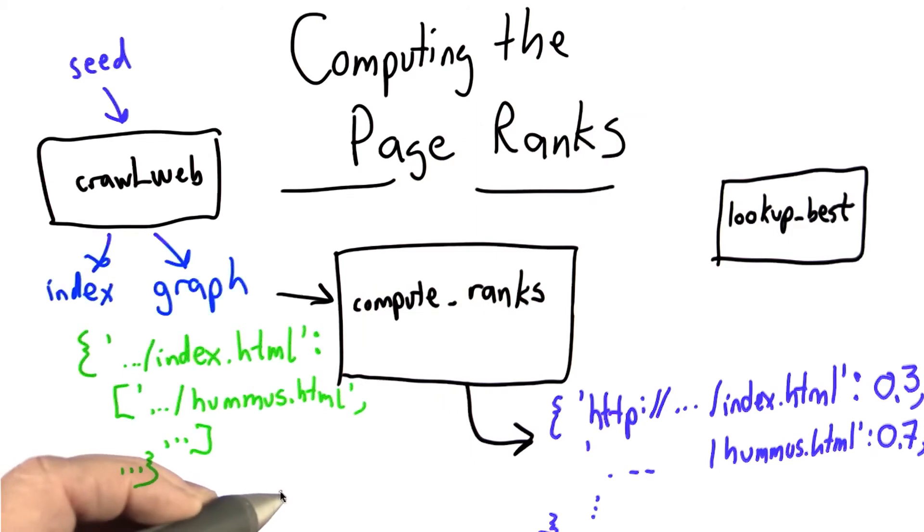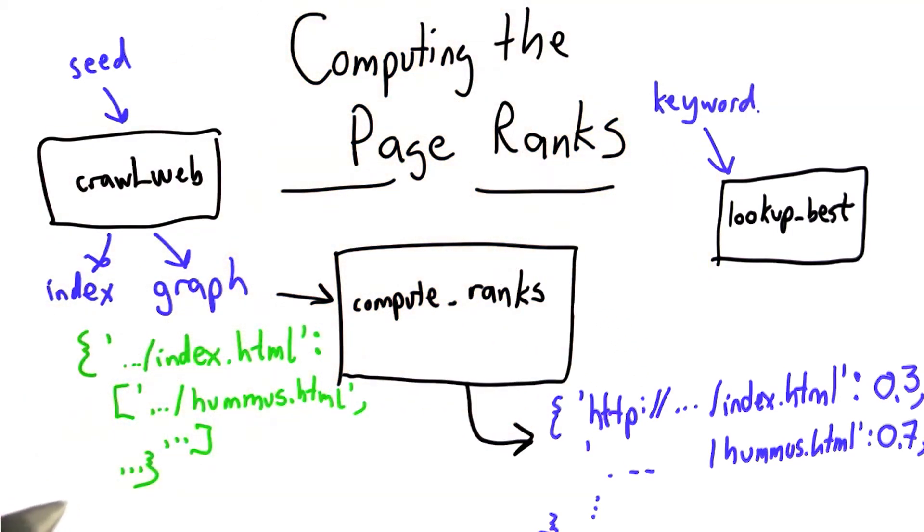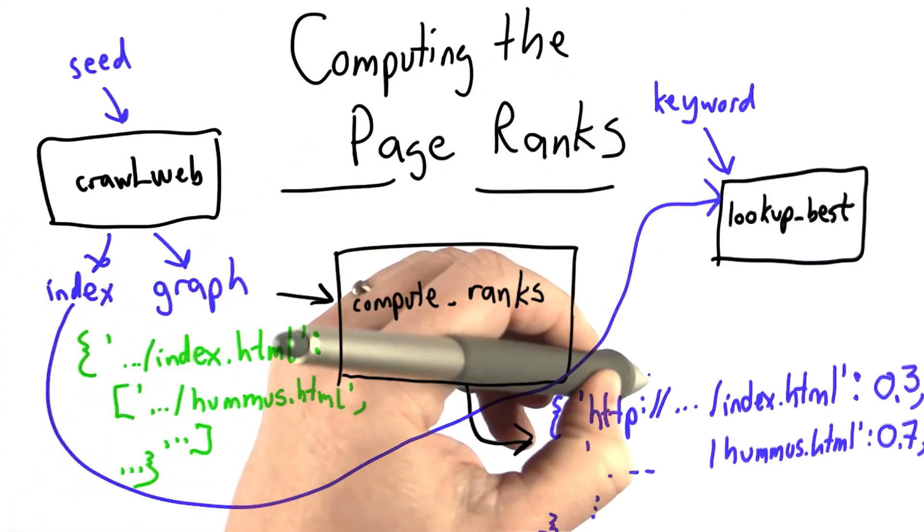Lookup_best will take three inputs. It will take the keyword we're looking for, the index that came from the crawl, and the ranks.